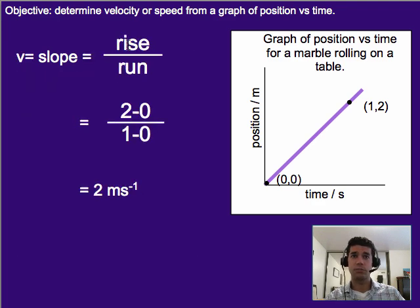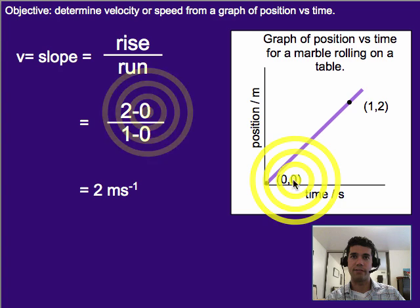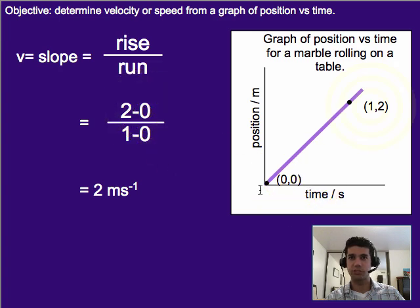So to do this, we plug in for two data points here. We've got a y value of two, we've got the other y value of zero, so we look at that change. We look at a run of one minus zero, and that gives us two over one, or two meters per second. That would be the value of our velocity.